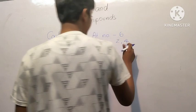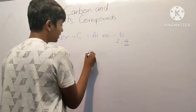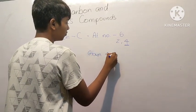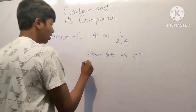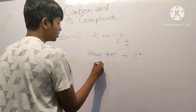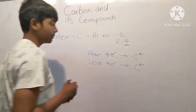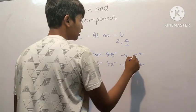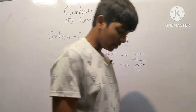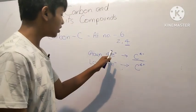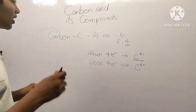So what carbon can do is either gain 4 electrons to form a carbon 4 minus ion, or it can lose 4 electrons to form carbon 4 plus ions. Let's look at both examples.